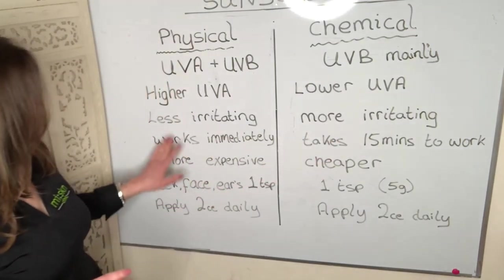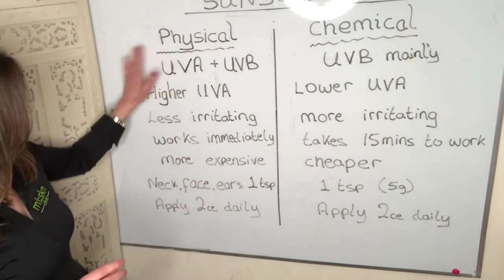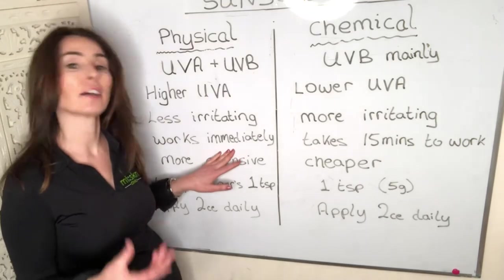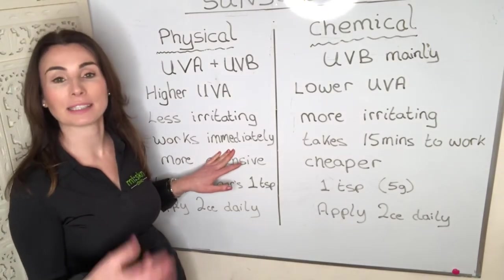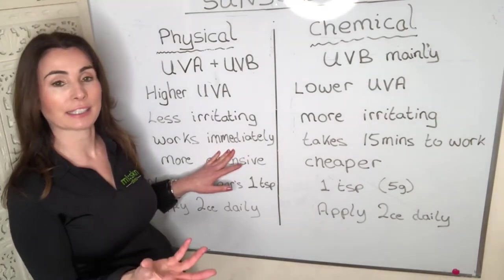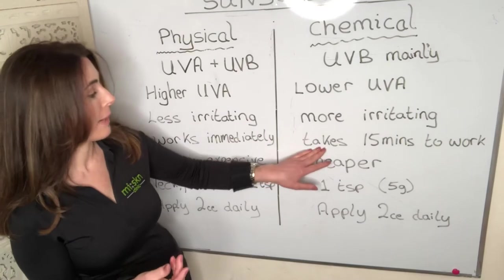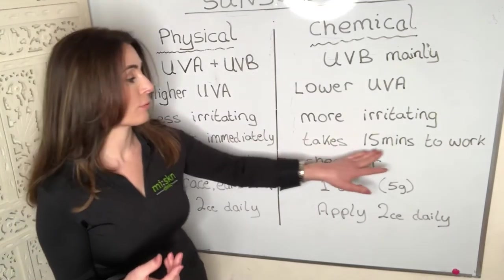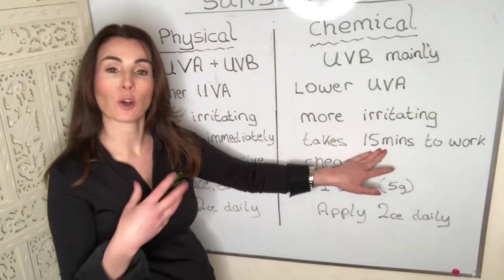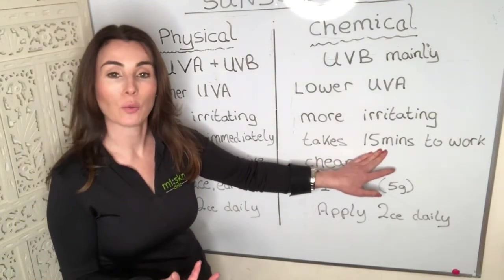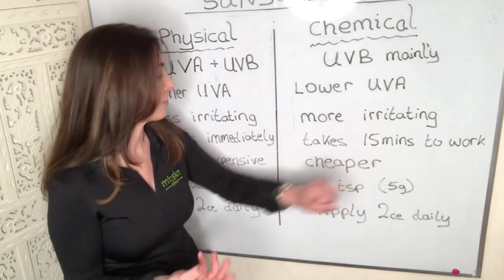Physical sunscreens work immediately on contact with the skin because they act like a mirror and start reflecting light straight away. Chemical-based sunscreens, on the other hand, can take about 15 minutes to fully absorb into the skin before they are working effectively in the sun.